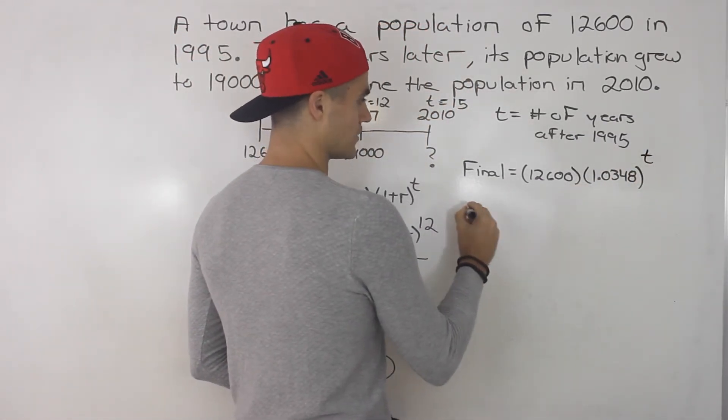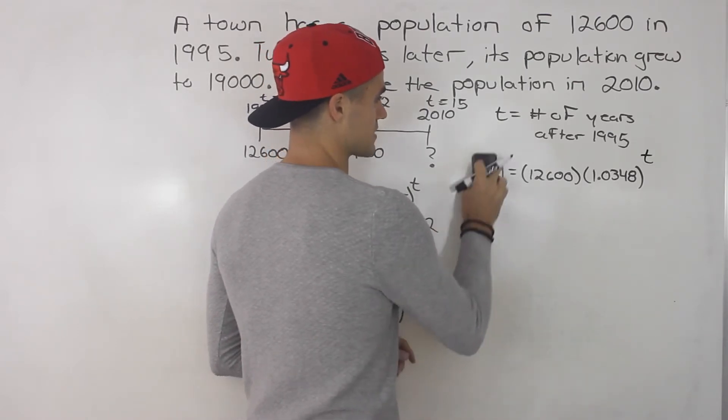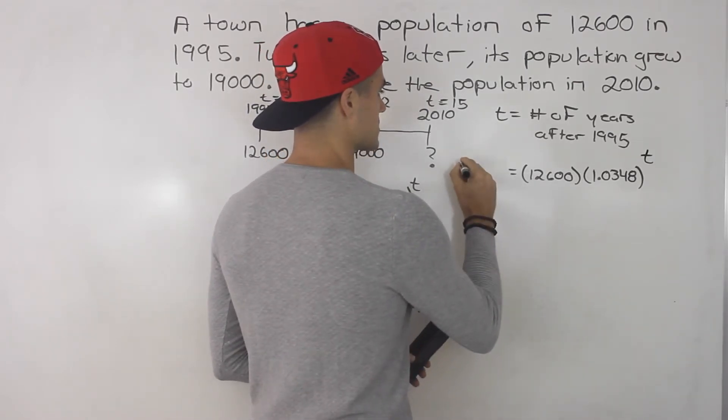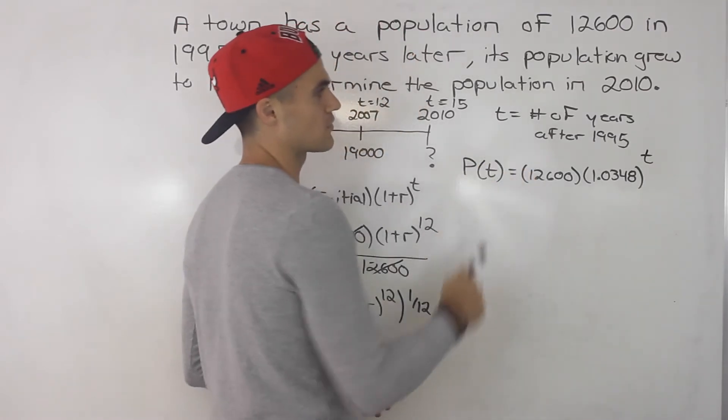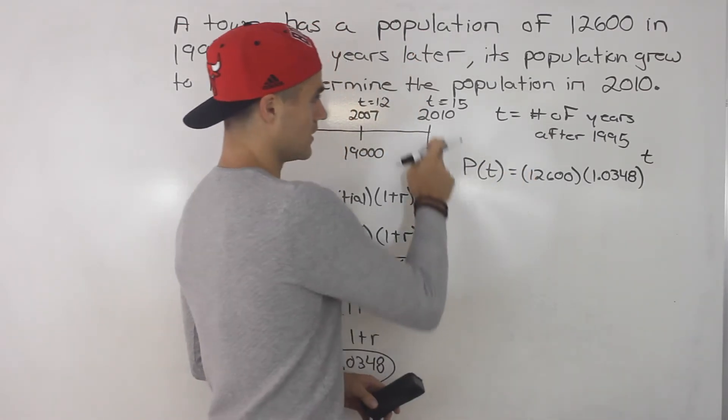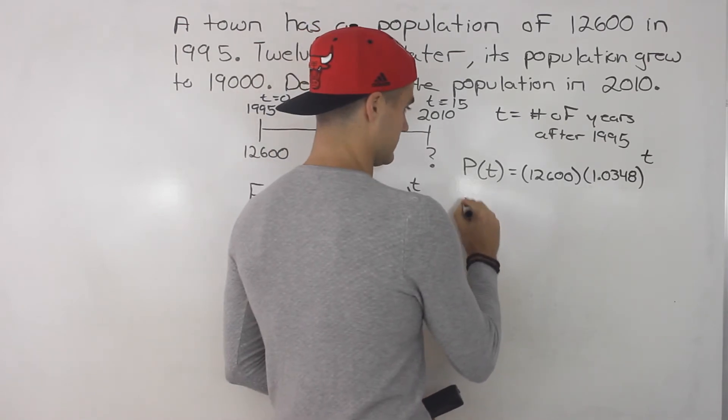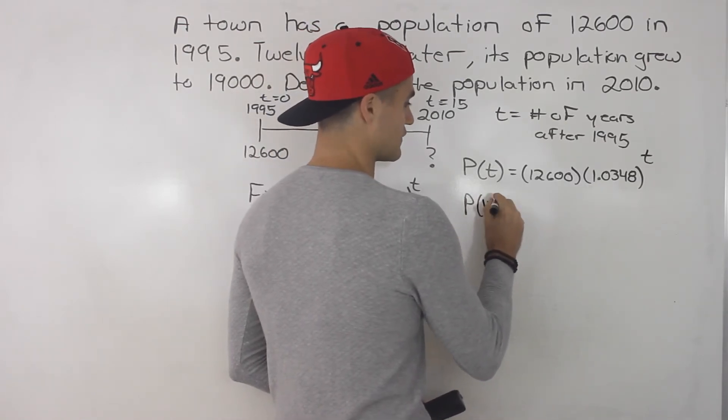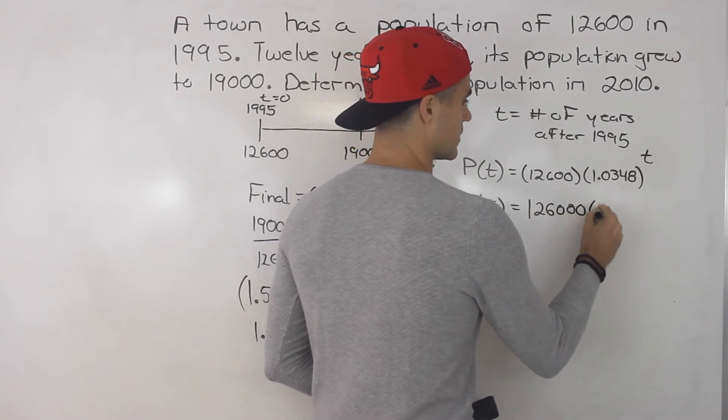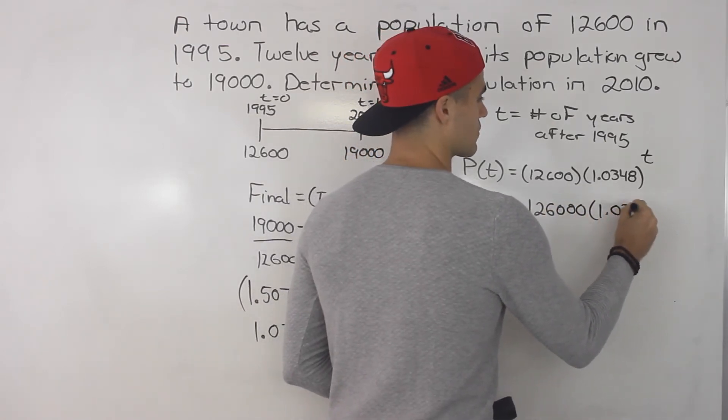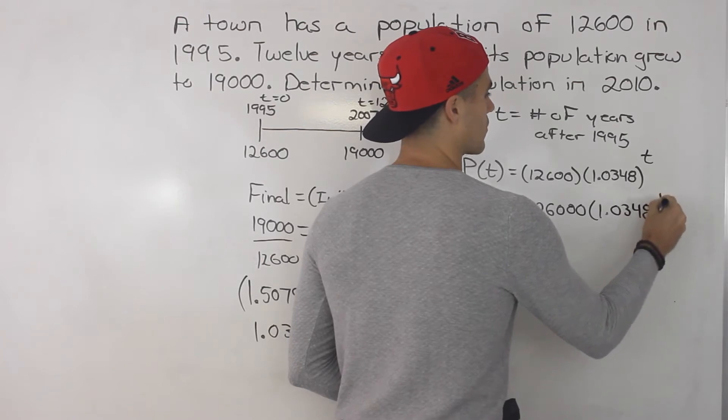So that means the population, let's actually call this, instead of writing final, let's put the population in terms of t, where t is the number of years after 1995. So we want the population in 2010. So we're going to be finding P of 15. So we'll have 12,600 times 1.0348 to the power of 15.